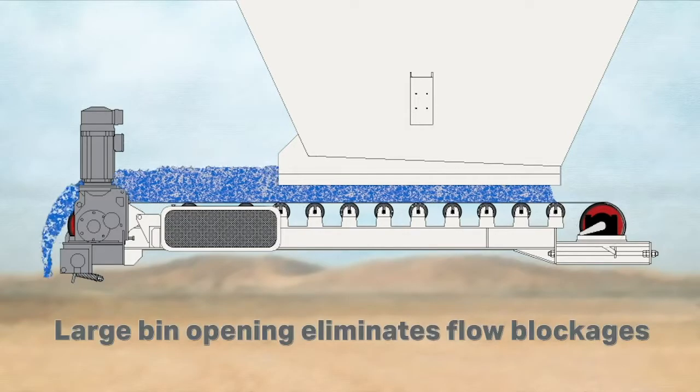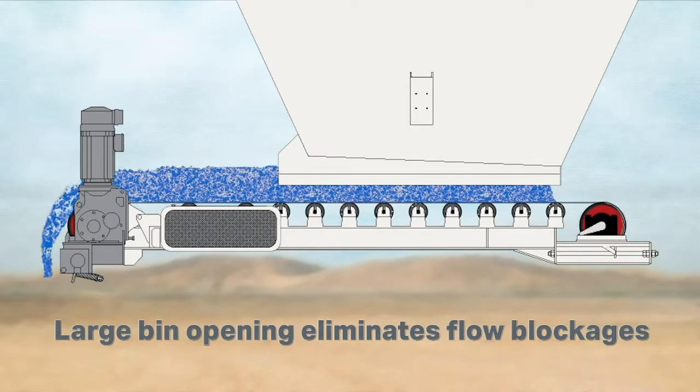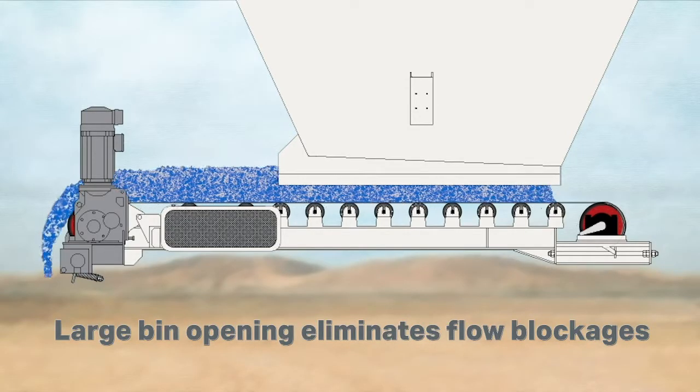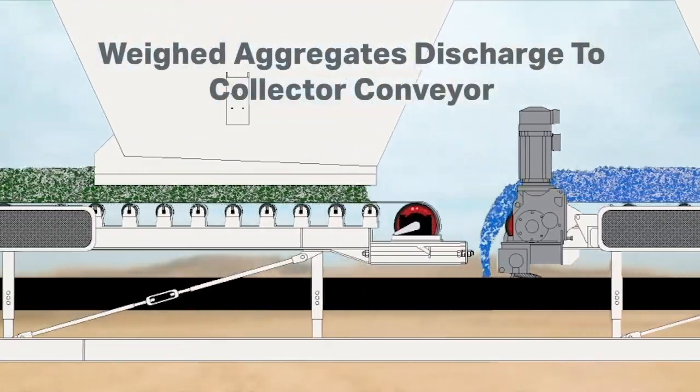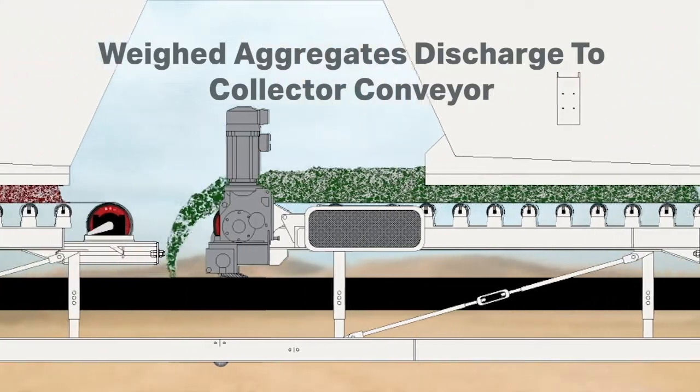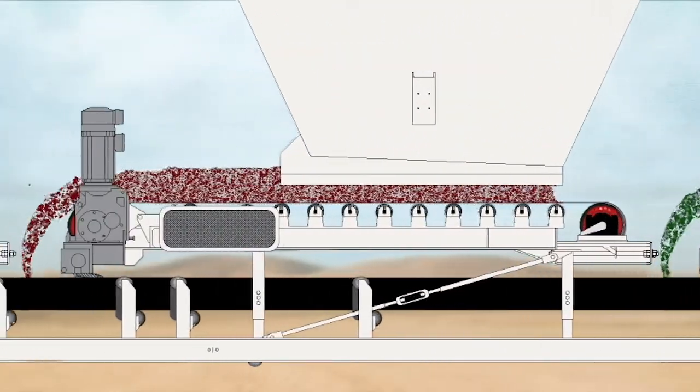The large bin openings eliminate flow blockages as the materials discharge onto a common collecting conveyor, which in turn discharges to an inclined conveyor to the truck.